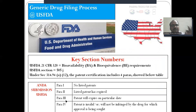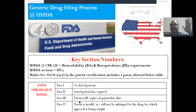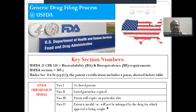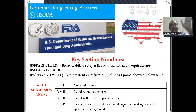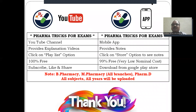Key ANDA submission paragraph certifications: Paragraph I — no listed patents; Paragraph II — listed patent already expired, apply directly; Paragraph III — patent will expire on a specific date, so you prepare and file in advance; Paragraph IV — the patent is invalid or will not be infringed. Sometimes branded companies hold patents that courts later declare invalid due to fraud, and in such cases a Paragraph IV certification applies.